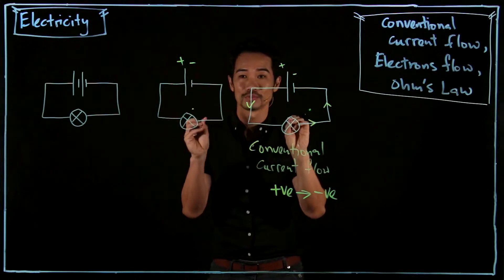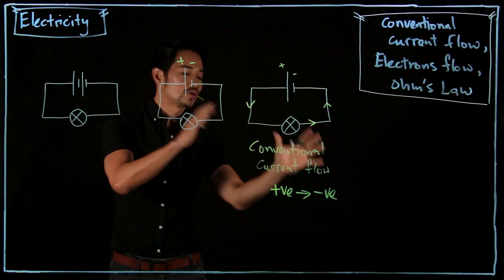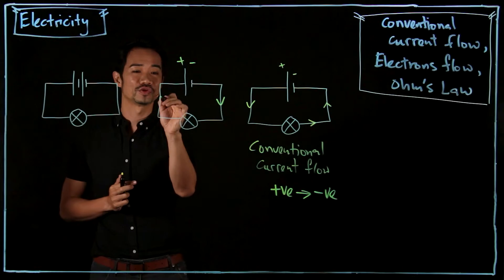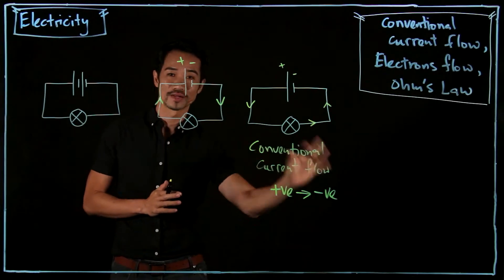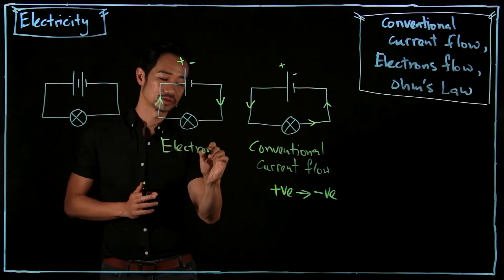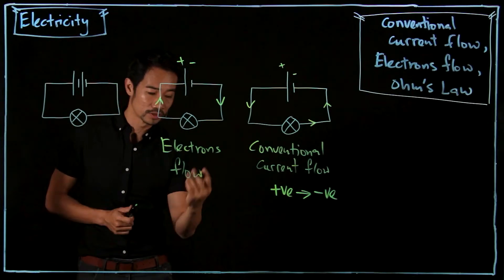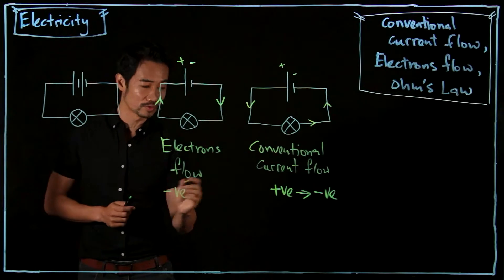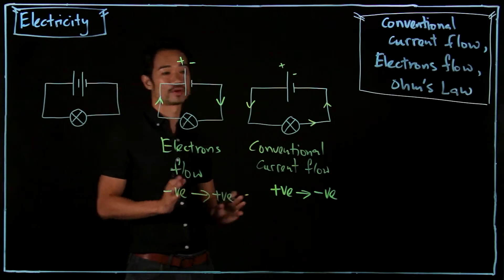But actually, it doesn't matter. The light bulb will still light up. So, but to counter this whole thing, this negative to positive, which is what happens actually, they just call another term. They call this electrons flow. So what is electrons flow? It's what is actually happening, that electrons are actually flowing from negative to positive polarity.